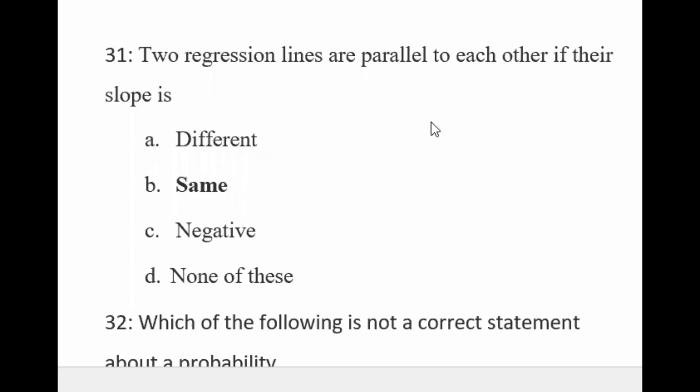This is the seventh part of biostatistics MCQs. Two regression lines are parallel to each other if their slope is the same.